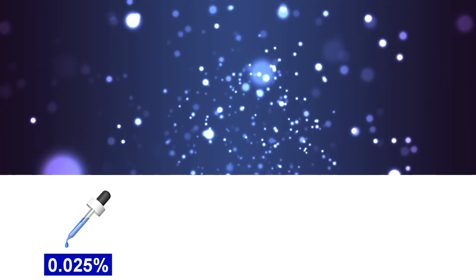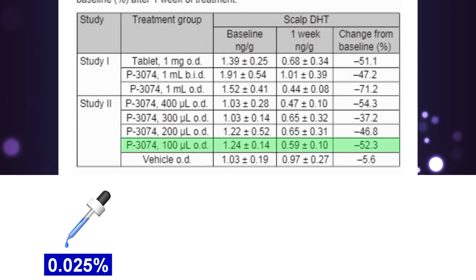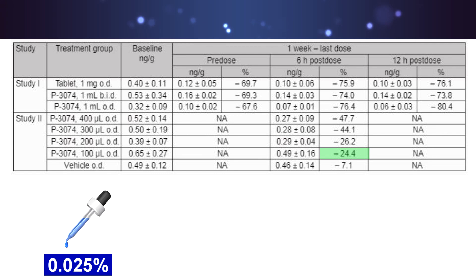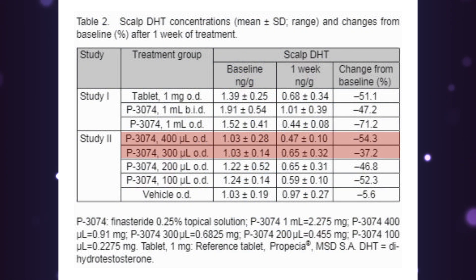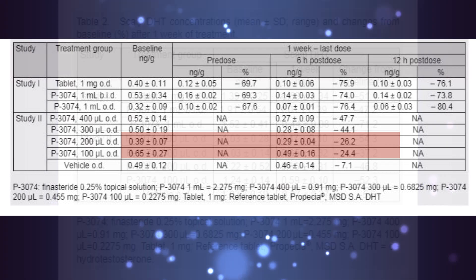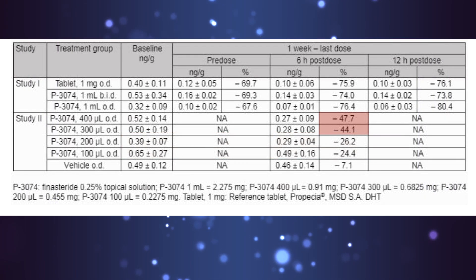Surprisingly, the second best was the weakest 0.025% solution, with scalp DHT suppression of 52.3% and serum DHT suppression of only 24.4%, making it the most ideal dose of all four — maximizing scalp DHT suppression while minimizing finasteride plasma exposure. The 0.05% and 0.075% concentrations induced worse scalp DHT suppression compared to 0.025% and also caused unnecessarily high plasma DHT suppression.